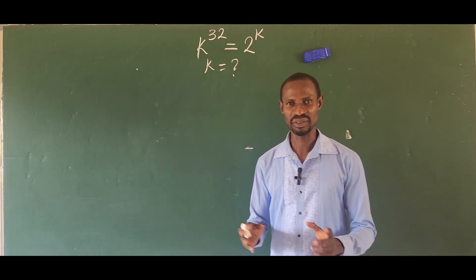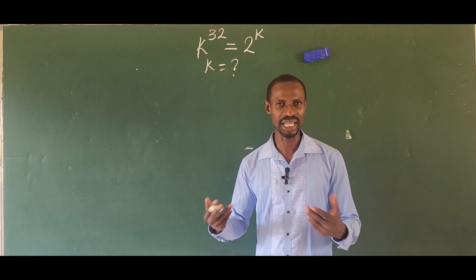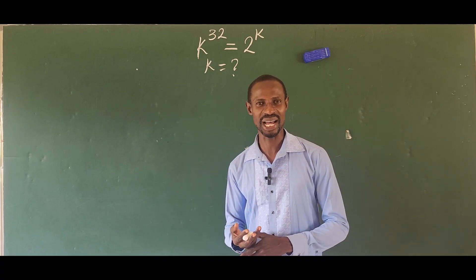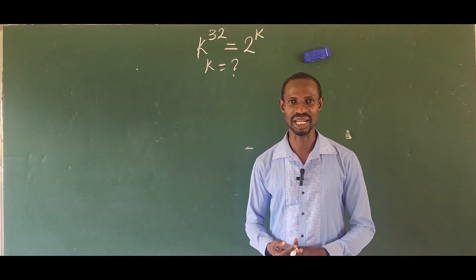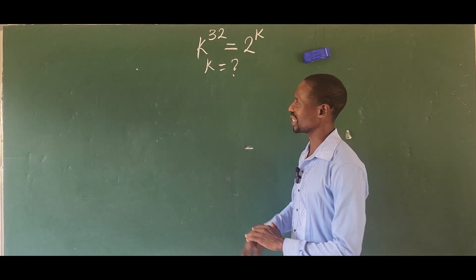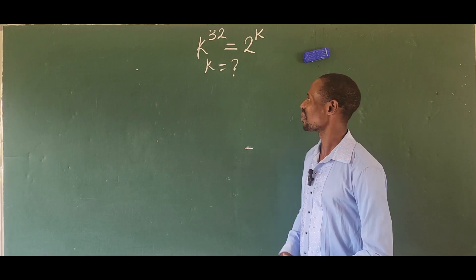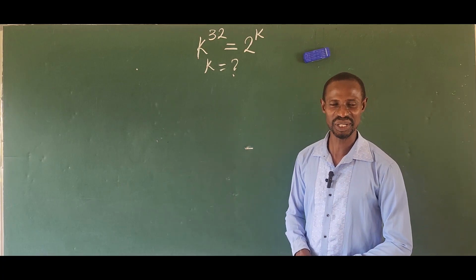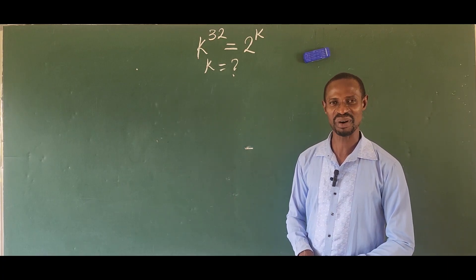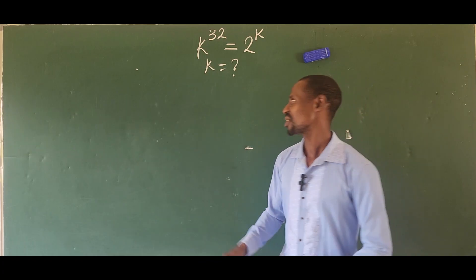Thank you to everyone that pointed out that error. We are not here to mislead people, and that's why I just had to take down that video and make it again. So the question is: k to the power of 32 equals 2 to the power of k. What is the value of k?